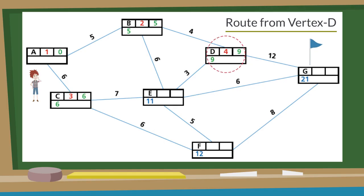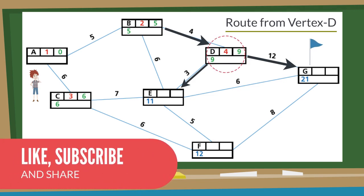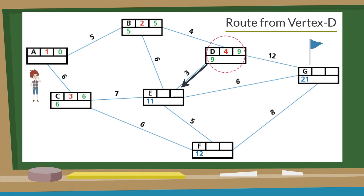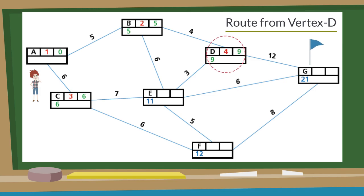Now D is the source node, and it is directly connected with B, E, and G. Because B's final value has been calculated, we will ignore it. The working value of E from D is 9 plus 3, equal to 12. But E is already having a working value of 11, which is lesser than 12, so it will not be changed. The working value of G from D is 9 plus 12, equal to 21. Now to decide the next source node and its final value, we consider E, G, and F. Because E has the smallest working value, it becomes its final value and the source for the next step.